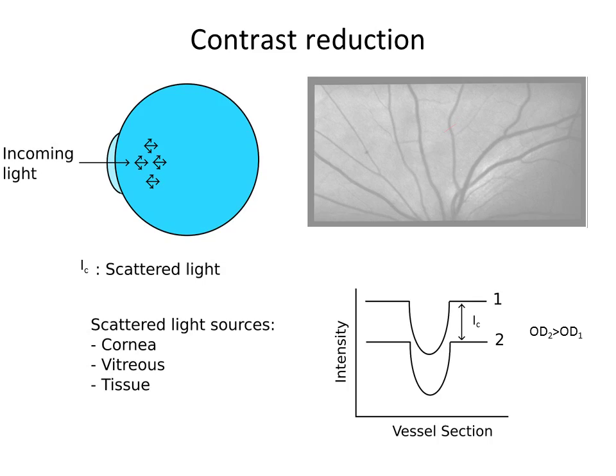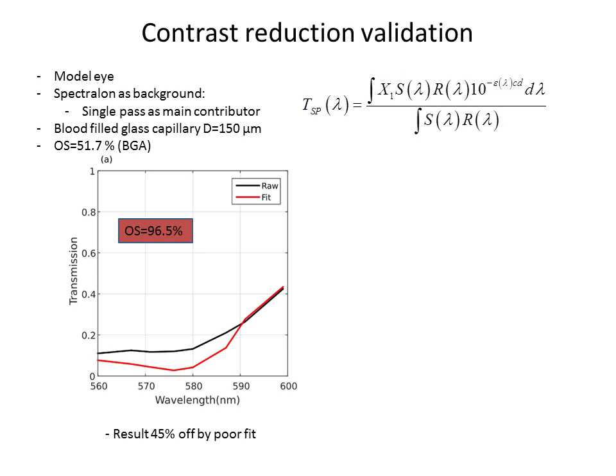To validate how the contrast reduction works, we did a simple experiment with a model eye, introducing a glass cuvette filled with blood at 50% saturation. You can see here the raw data, raw transmission in black. And we fitted a single-pass model.